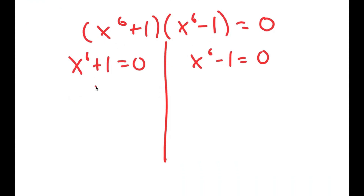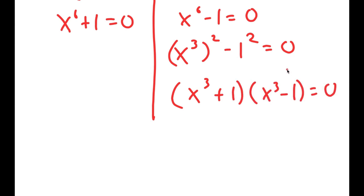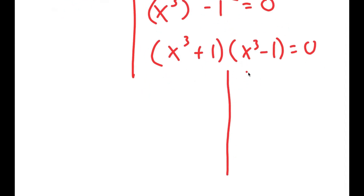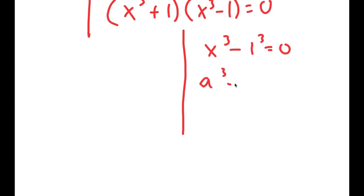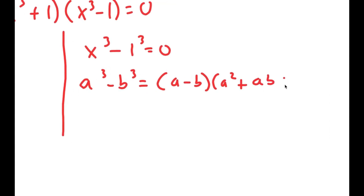I'm going to do the same thing again and rewrite x to the power of 6 minus 1 equals zero as x cubed squared minus 1 squared equals zero. Using the difference of squares property again, I get x cubed plus 1 times x cubed minus 1 equals zero. For x cubed minus 1 equals zero, I can use the property a cubed minus b cubed equals a minus b times a squared plus ab plus b squared.